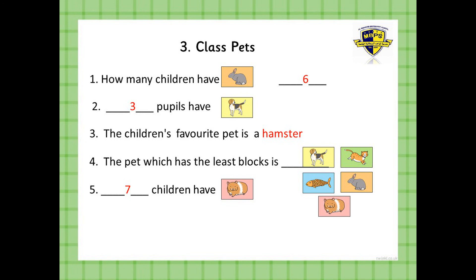Now, which pet has the least blocks? I'm going to leave you to do that one. Number five — how many pupils have a hamster? We're going to count the blocks on top of the hamster, or we can get our ruler and put it across the bar and see where the last block in the hamster goes. It goes to a number and you put that number.